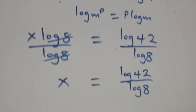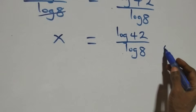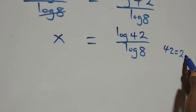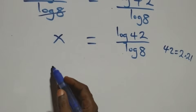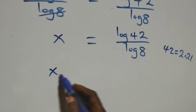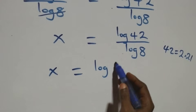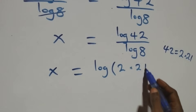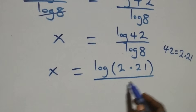From what we have here, we can write 42 as 2 times 21, which implies what we have becomes x equals log of 2 times 21, over log 8.